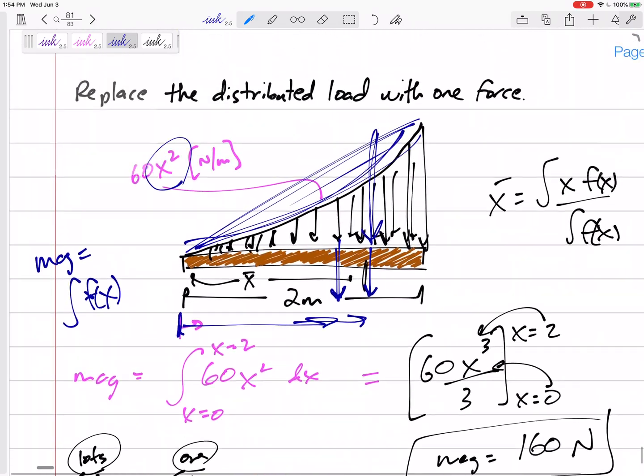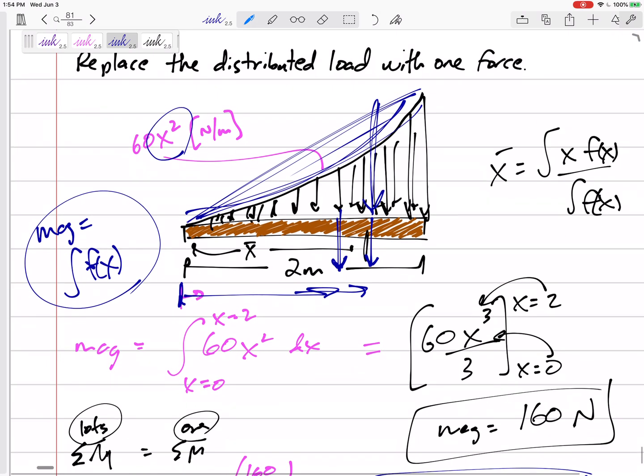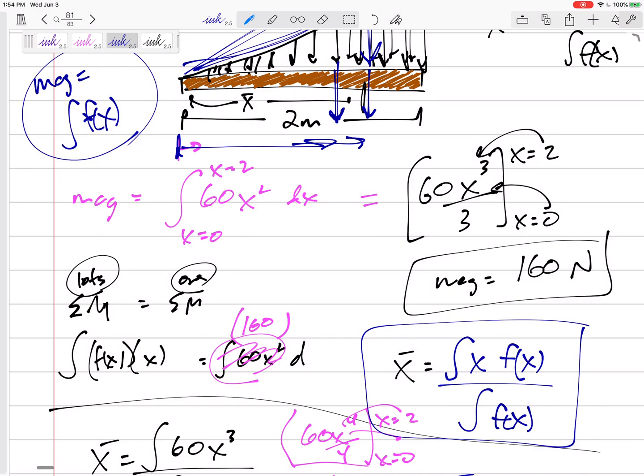If you got a function, the magnitude is the area, is the integral of the function from zero to two. The centroid is the integral of x times the function divided by the magnitude or the integral of the function.